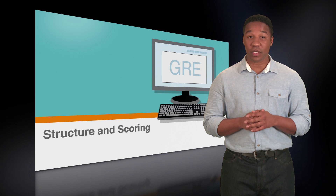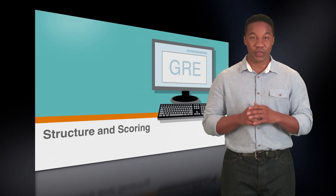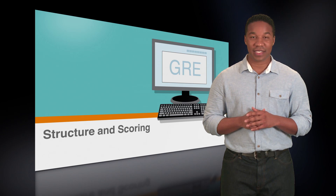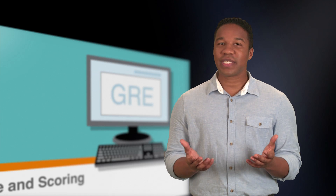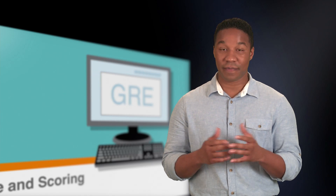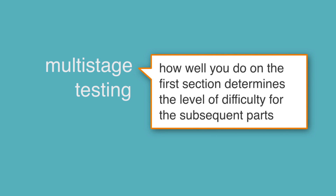You'll get the results of the other sections right after you complete the test. To understand scoring for the Quantitative and Verbal sections, you should know about what GRE developers call multi-stage testing. Multi-stage testing means how well you do on the first section determines the level of difficulty for the subsequent parts.